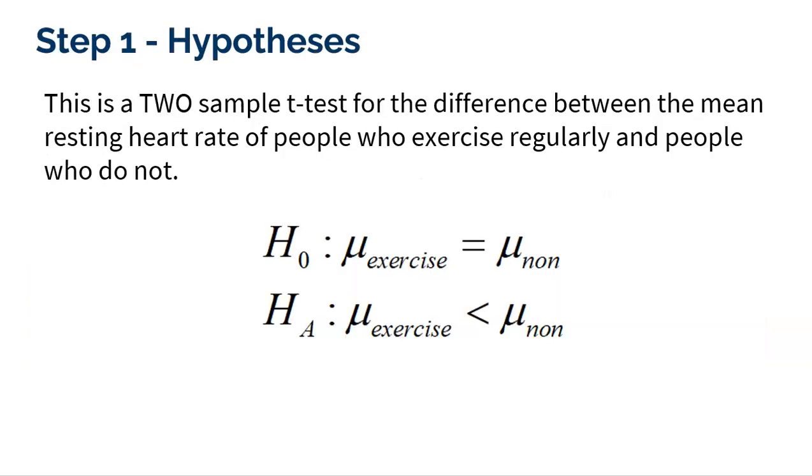So step one is stating this is a two-sample t-test for the difference between the mean resting heart rates of people who exercise and people who do not. The null is that the mu, the mean for the people who exercise, is no different than the mean for the people who do not. And the alternative is what we're wondering, is the mean resting heart rate for those that exercise definitely less than those that do not?